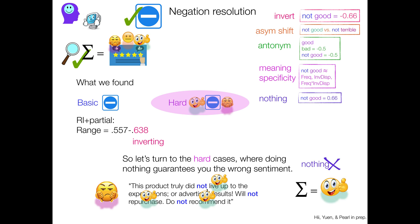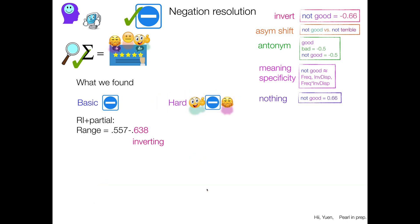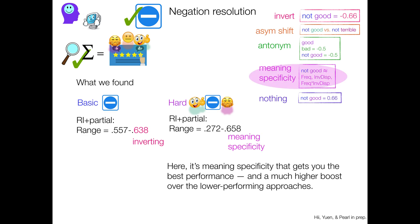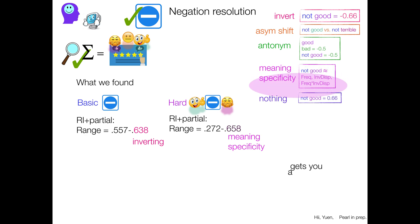And here we actually find a range of performance from 0.272 to 0.658. So much broader range already. And the top, the best performing approach is meaning specificity. It gets you the best performance and a much higher boost over the lower performing approaches on these hard cases, which by definition are hard, where, you know, nothing gets you zero. So really 0.658 is none too shabby in this world.